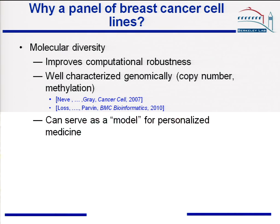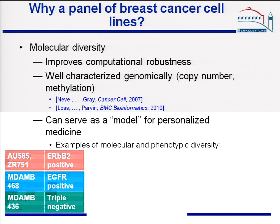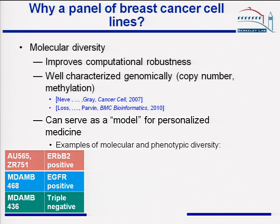Next, let me give you some examples of molecular diversity. For example, some cell lines have been estrogen receptor positive, some are EGFR positive, and some are triple negative.